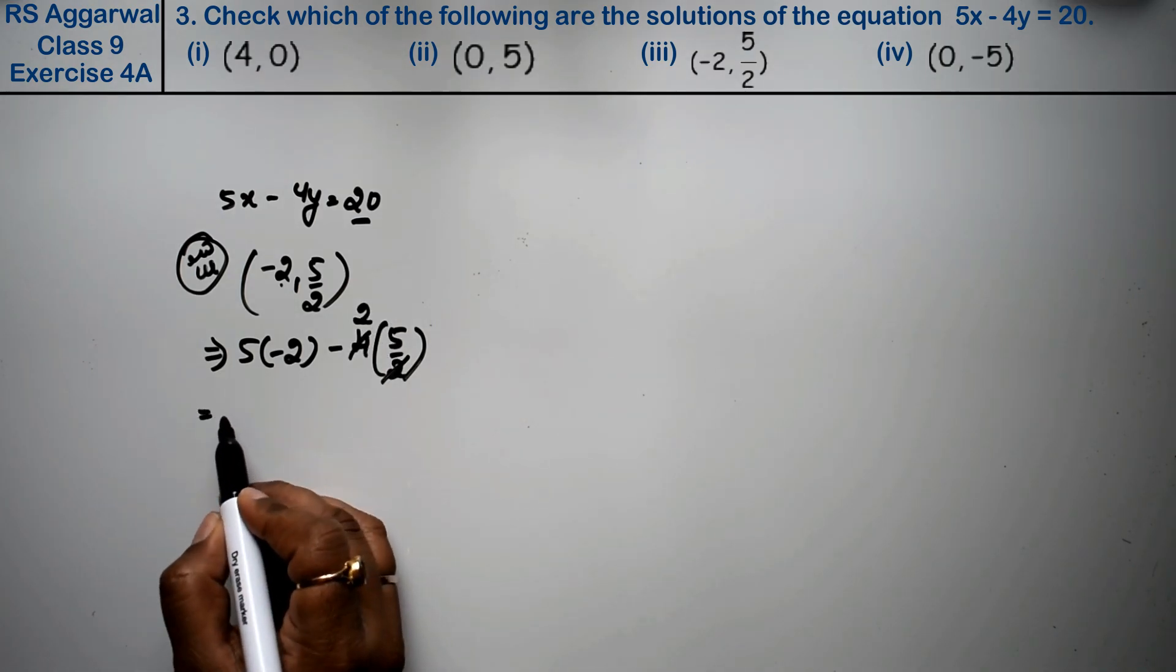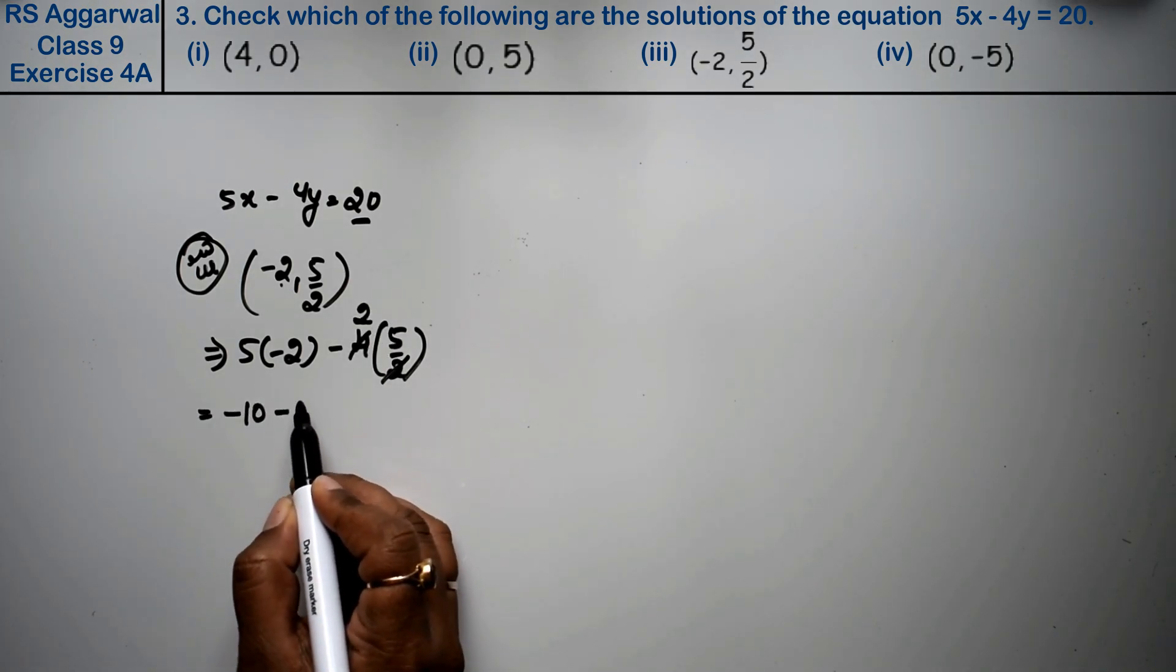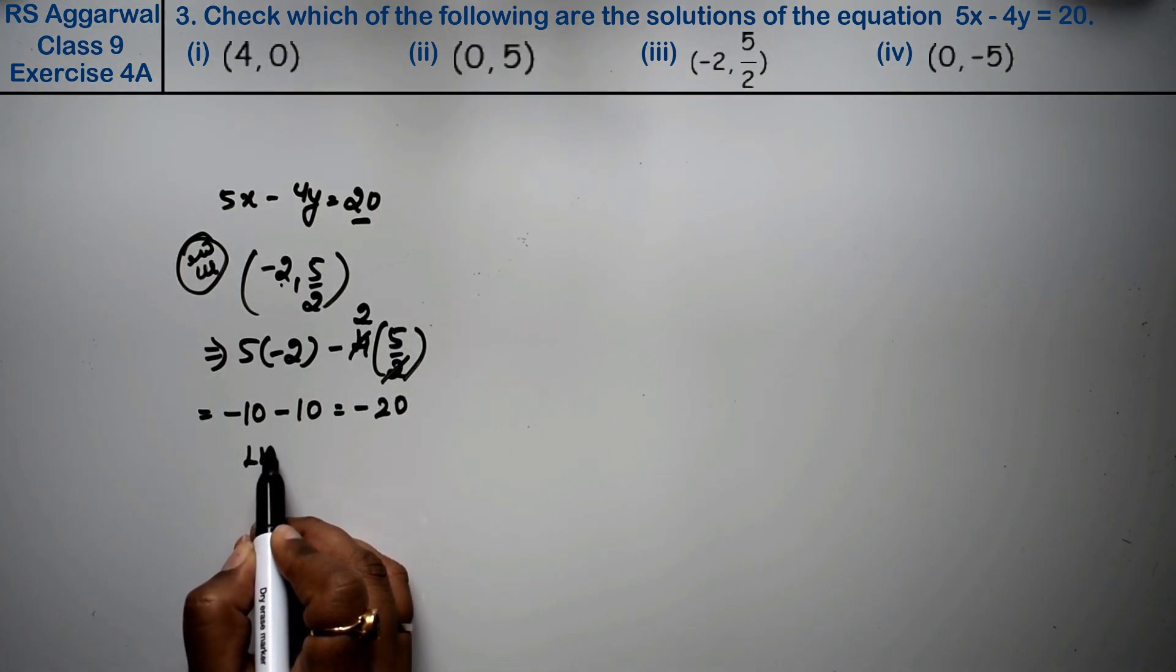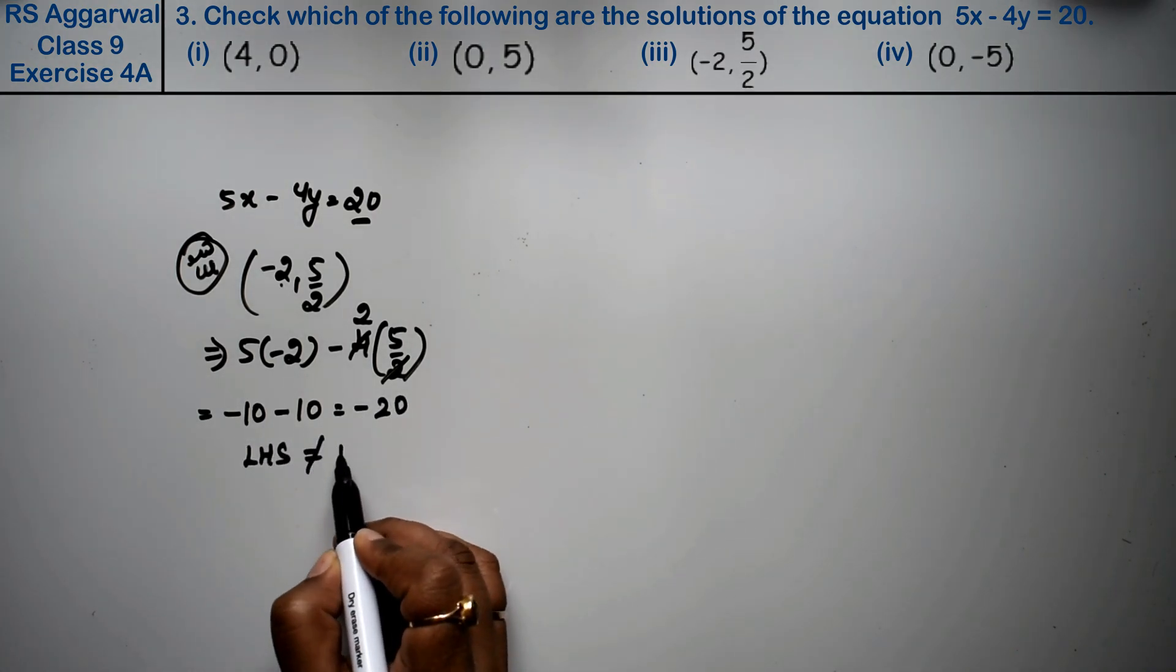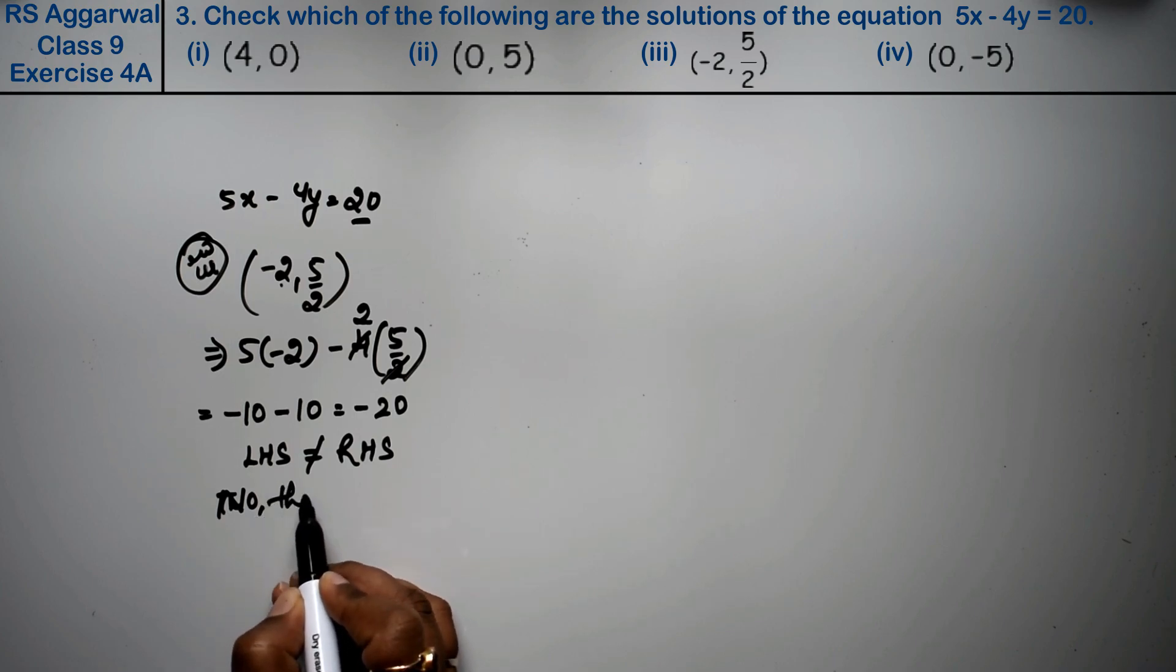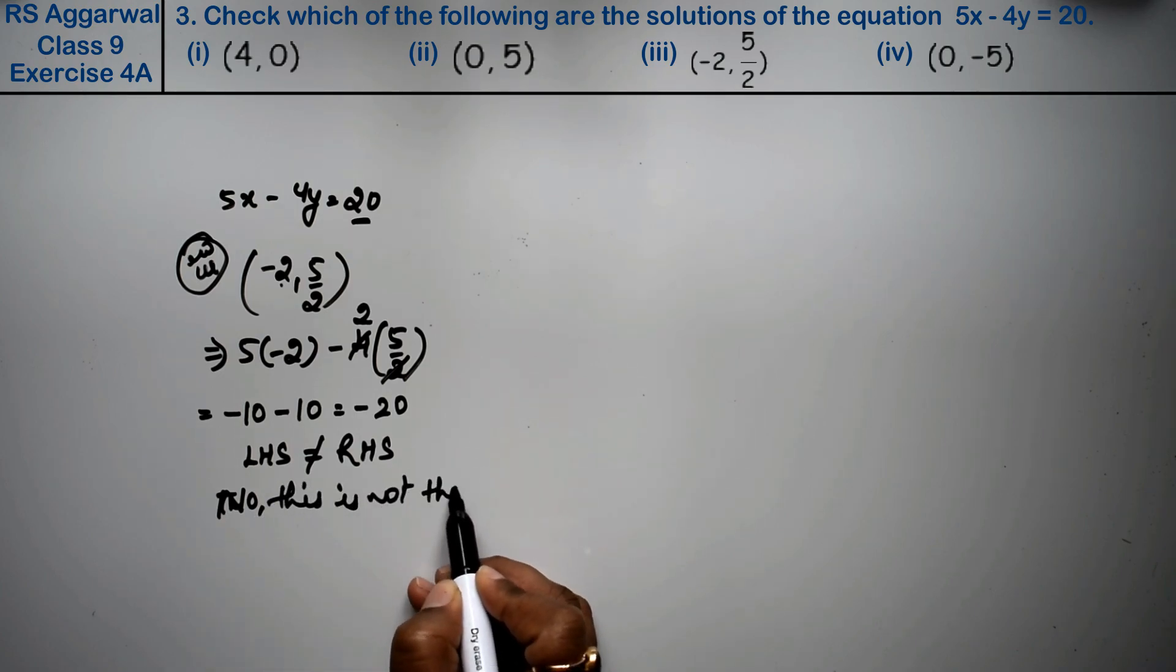So how much is it? Minus 10 minus 10, that is minus 20. So that means left-hand side is not equal to right-hand side. Hence, the solution is no. This is not the solution.